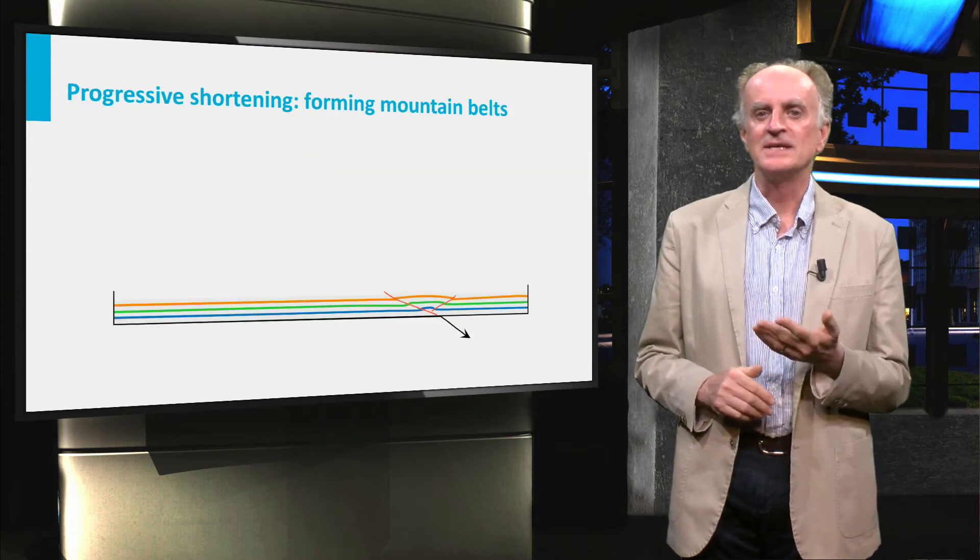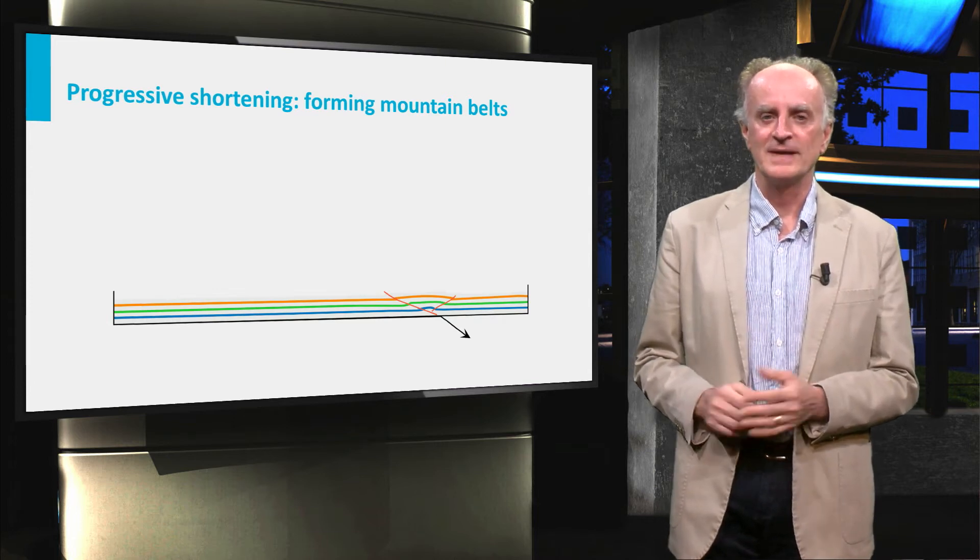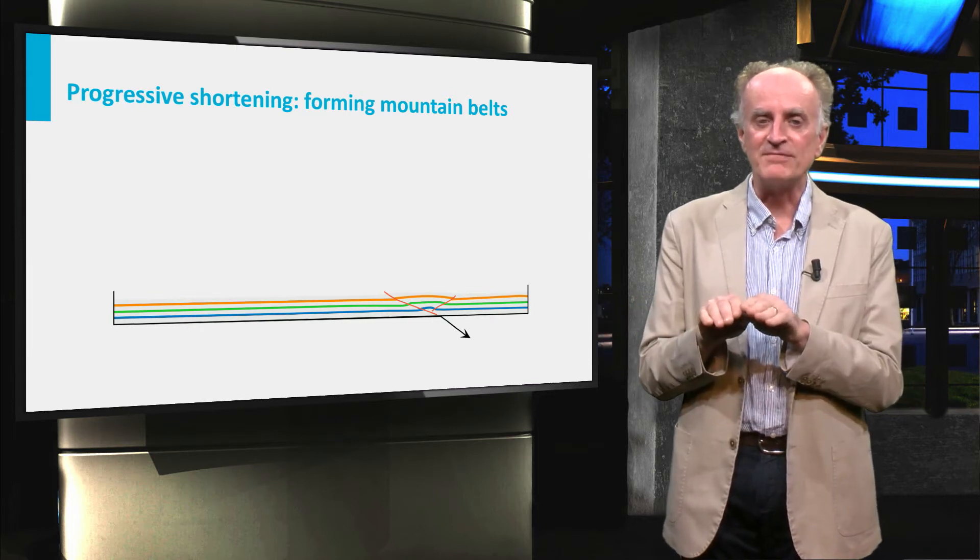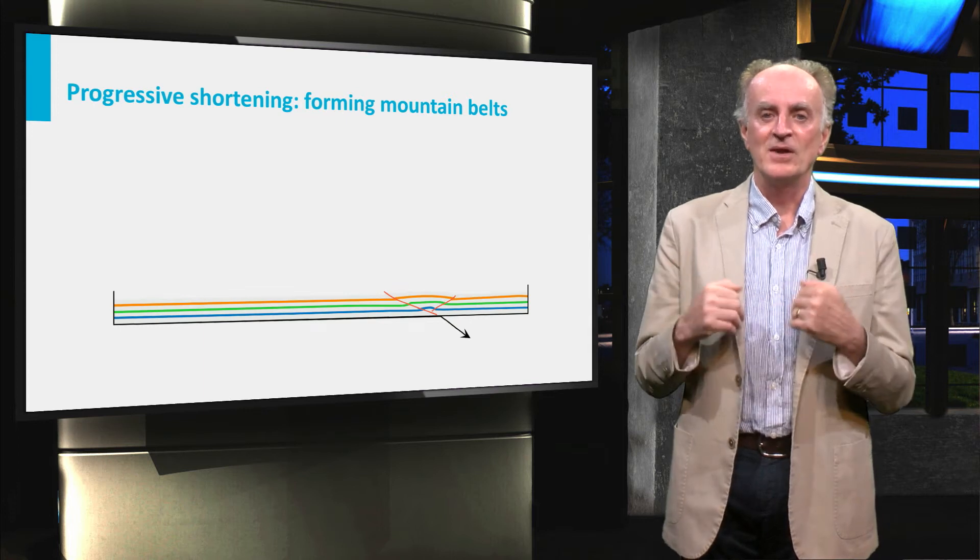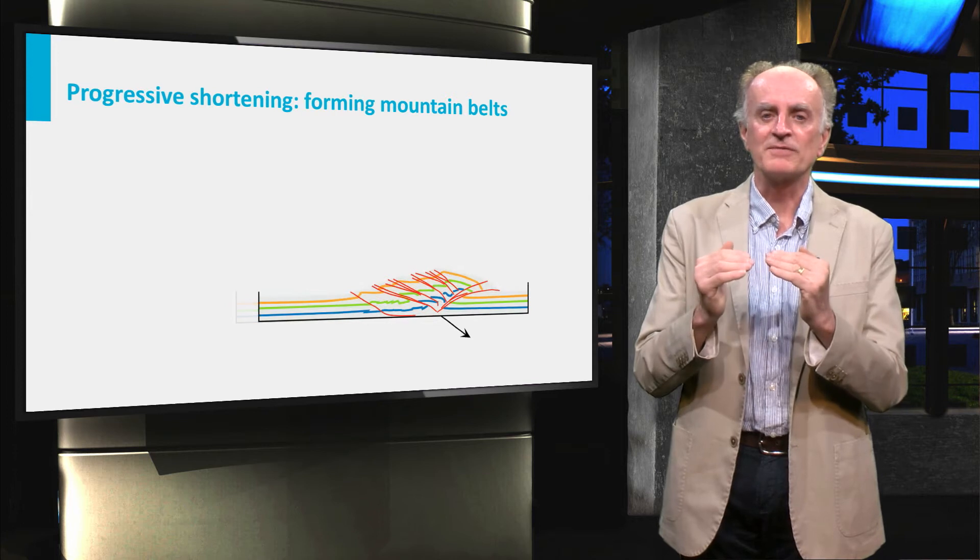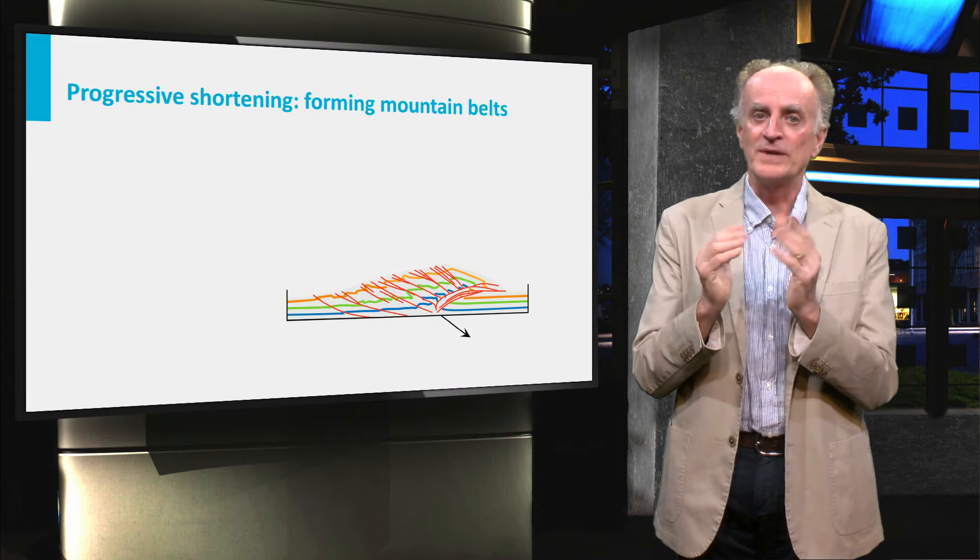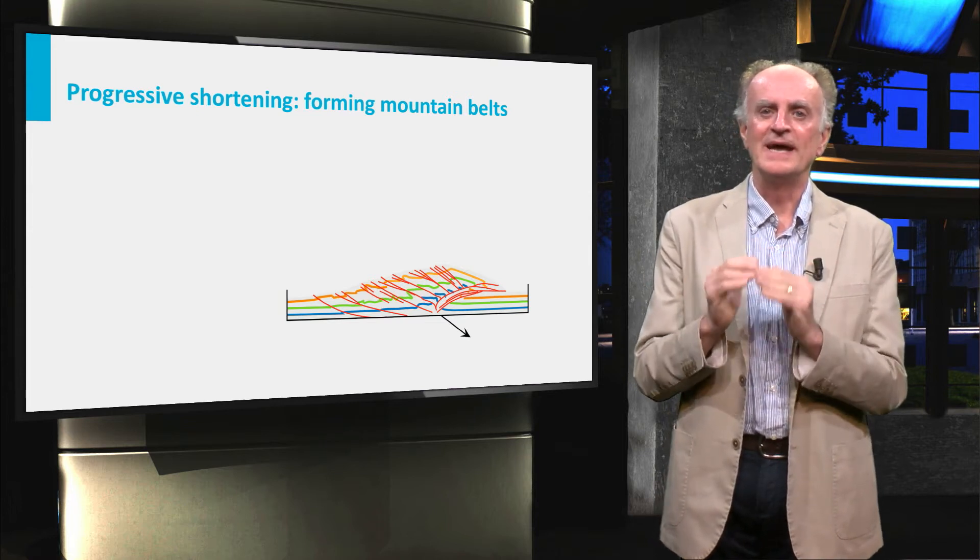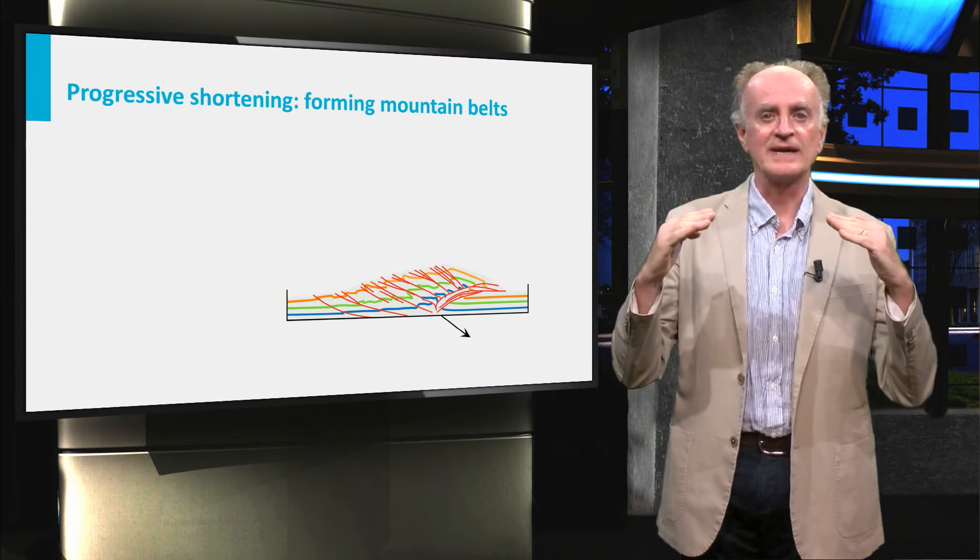In the slides you see now a simplified scheme of how a mountain belt forms. At the initial stages of shortening the orogenic wedge is small and defined by two thrust surfaces with opposite dip. With increasing convergence the wedge grows because of the mass being transported by the plate and accreted to the orogen. Note how the wedge grows but preserves its shape, nicely illustrated by the slopes of the two sides of the orogen which do not change their angle.